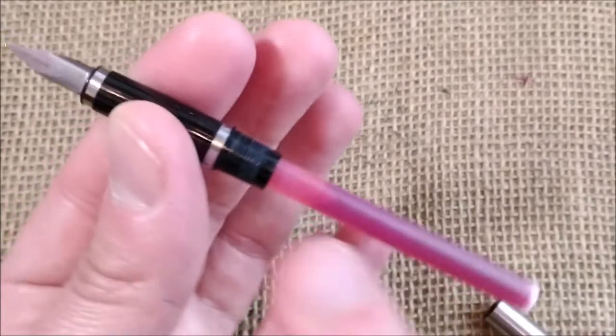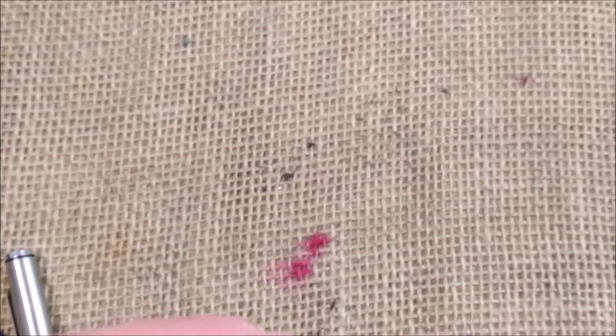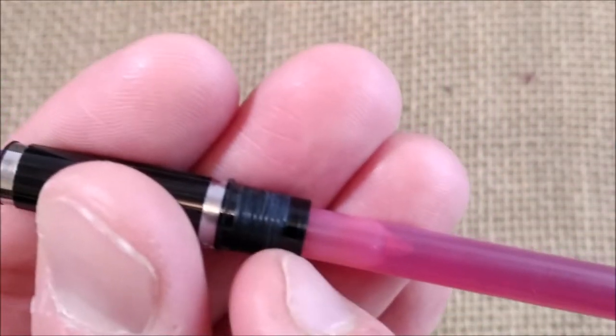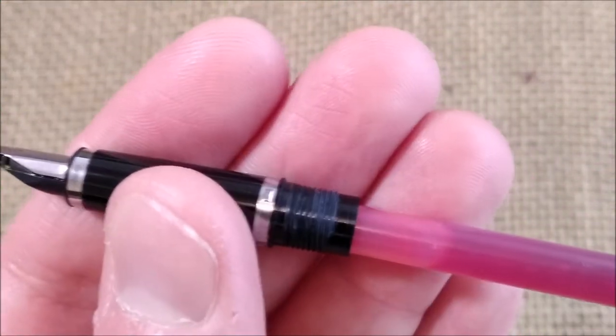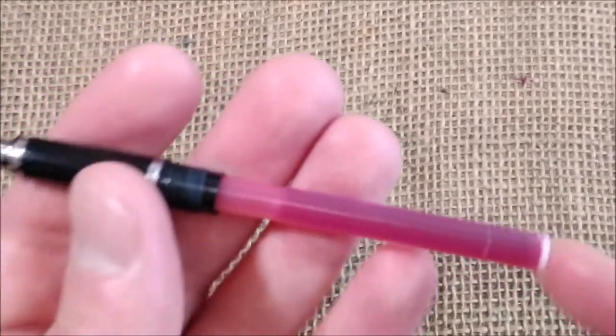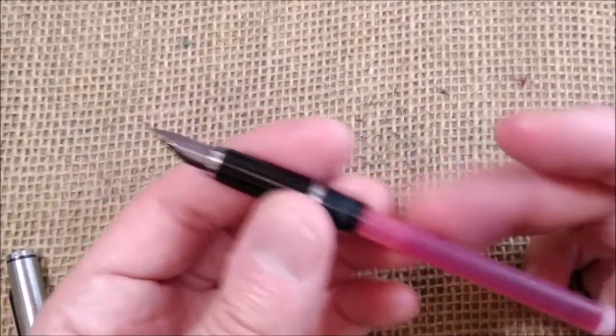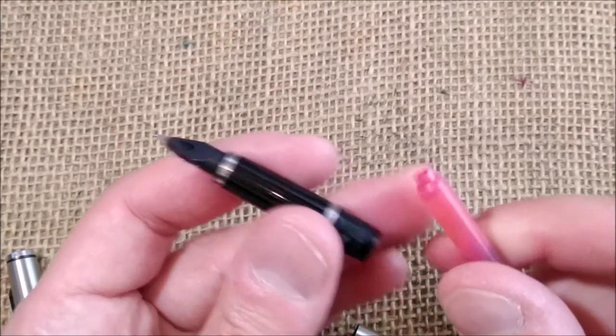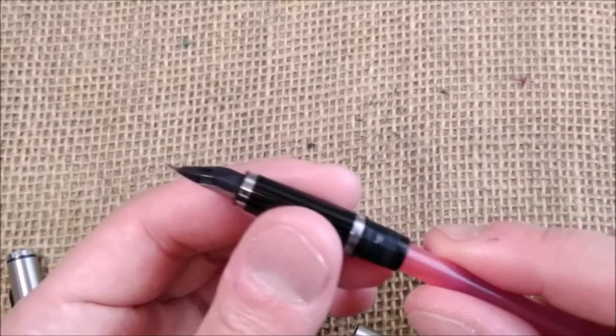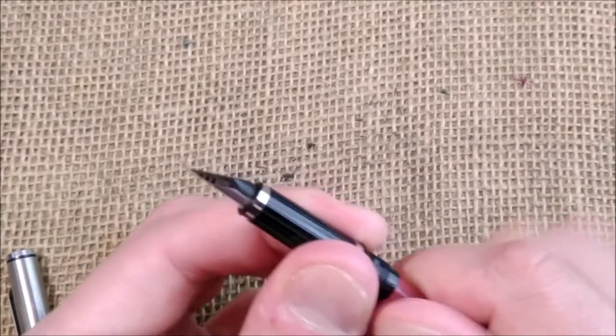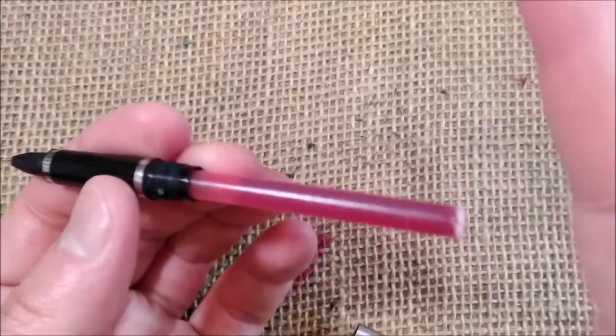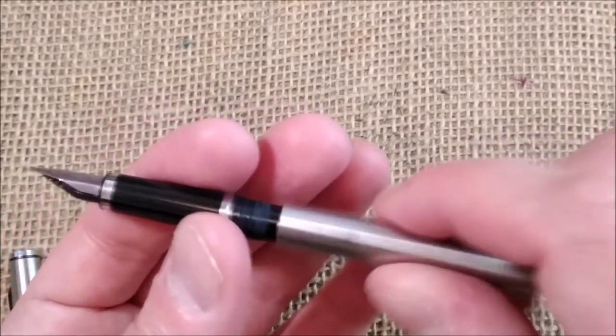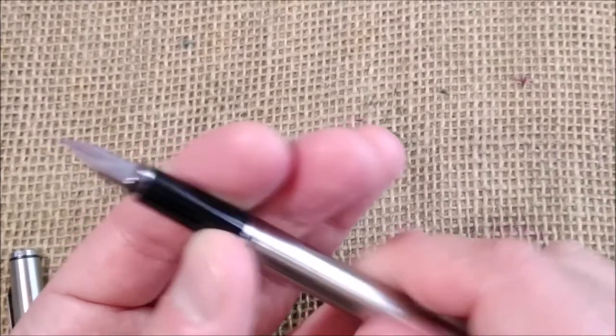When you open it you have this thread which is made of plastic like the rest of the section. This takes an international cartridge. This is a long Pelican cartridge so it takes international cartridges or converters. Sometimes the Pelican cartridges are a little narrower than the international ones. Or you can take two short international cartridges and put them inside the barrel. And this is it.